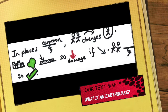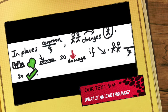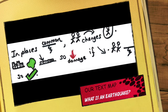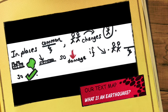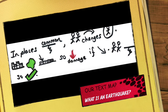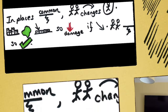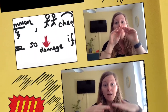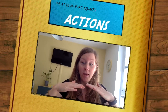In places where earthquakes are common, humans have made changes to keep themselves safe. Buildings in these countries are often smaller, so they'll cause less damage if they collapse. People will practice what to do if an earthquake happens so that they are prepared.